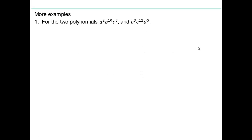Let's take some other examples. For the two polynomials you see here — a squared, b to the 10, c cubed; and b cubed, c to the 12, d to the fifth — find the least common multiple. I'll give you a few moments; go ahead and do that on your own.